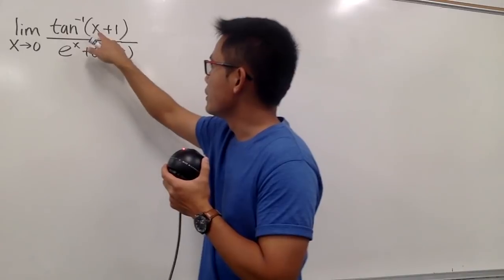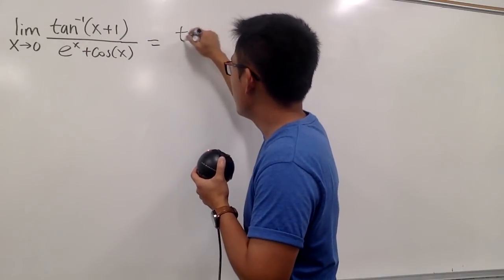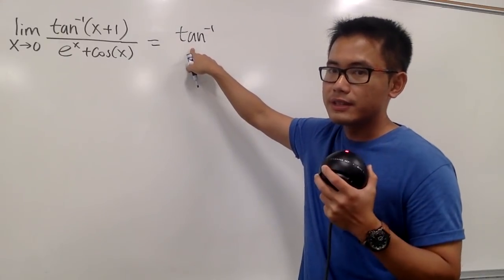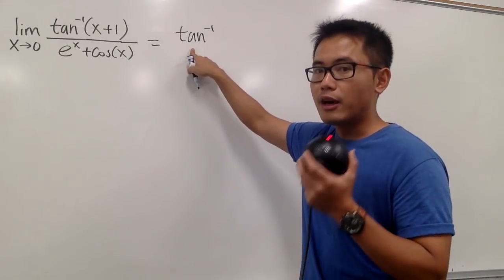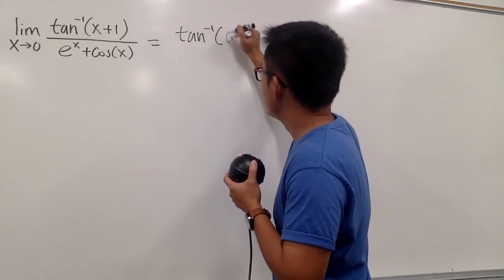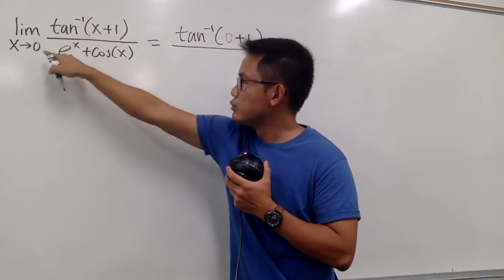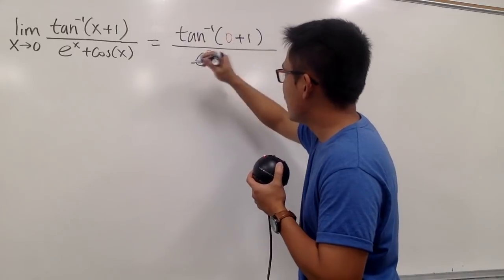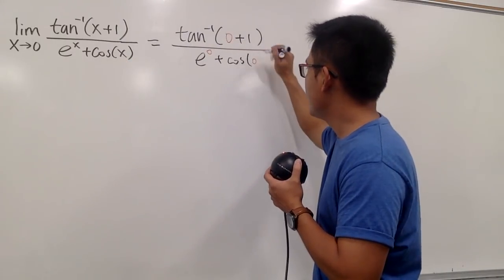Let me plug in 0 here. On the top we have the inverse tangent — some people write this as arctan, which is the same — of 0, plus 1 over e to the 0 power, and then plus cosine of 0.